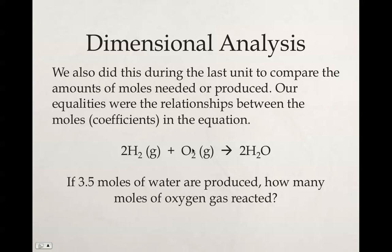We also just did this in our last unit when we compared the amount of moles needed or produced. We had a balanced chemical equation, 2H₂(g) + O₂(g) → 2H₂O. If we had 3.5 moles of water produced, how many moles of oxygen reacted? We started with 3.5 moles of H₂O. We then put moles of H₂O on the bottom using its coefficient, 2 moles of H₂O, equal to 1 mole of O₂ from our coefficient in the balanced equation. The moles of H₂O cancel out, and 3.5 divided by 2 gives 1.75 moles of O₂. The unit we end with at the top is the unit of our answer. Just a quick review of dimensional analysis because we're going to use it for this concept.